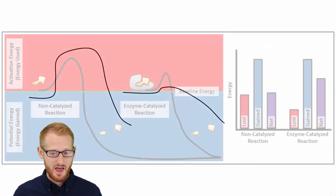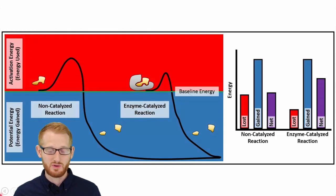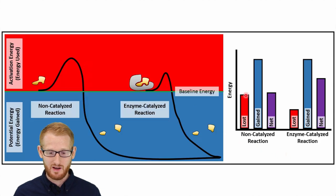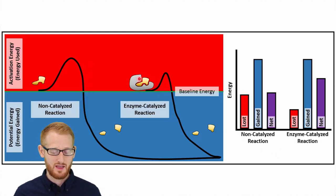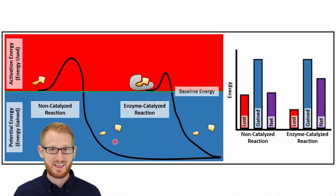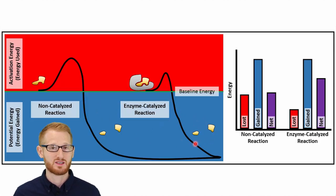If we look at what's going on here, we have this activation energy that has to be put into the system. If there's no enzyme present, that activation energy is going to be very high — a lot of lost energy. If there is an enzyme present, the activation energy is much lower, and so the lost energy is much less. This energy that is gained from the system — shown in blue here — when the substrate is broken down, is going to be the same either way.